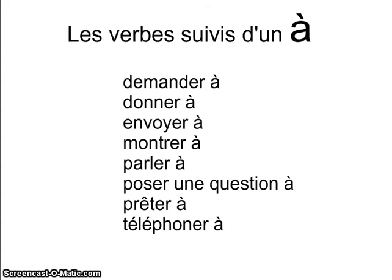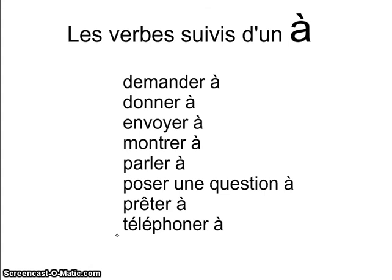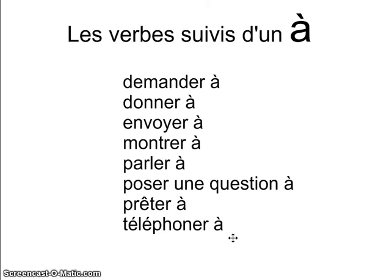Comment est-ce que vous allez savoir si vous devez utiliser un objet direct ou indirect? C'est très facile. Si vous avez un verbe qui est suivi — followed — suivi d'un 'à', vous devez utiliser les objets indirects. C'est très important d'identifier les verbes qui prennent 'à'. Voilà quelques exemples: demander à, donner à, envoyer à, montrer à, parler à, poser une question à, prêter à et téléphoner à. Cette liste se trouve à la page 205 dans le livre. Il y a d'autres verbes aussi, mais nous allons nous concentrer sur ces verbes pour maintenant.